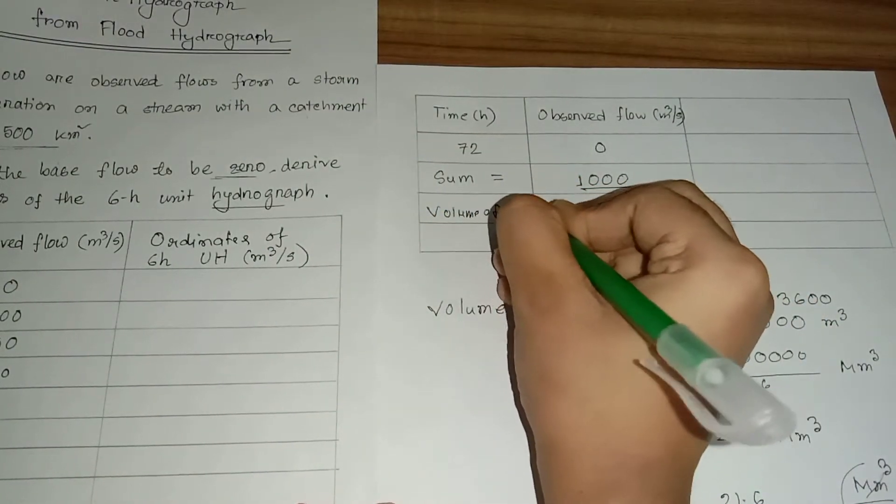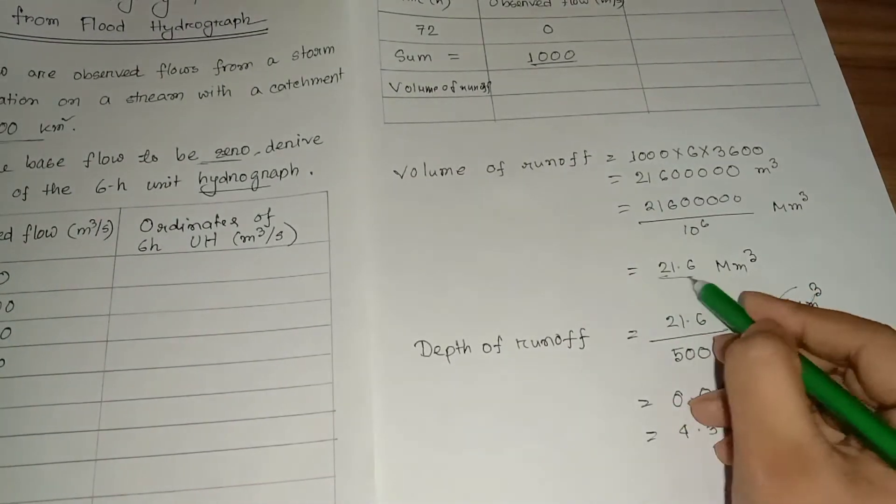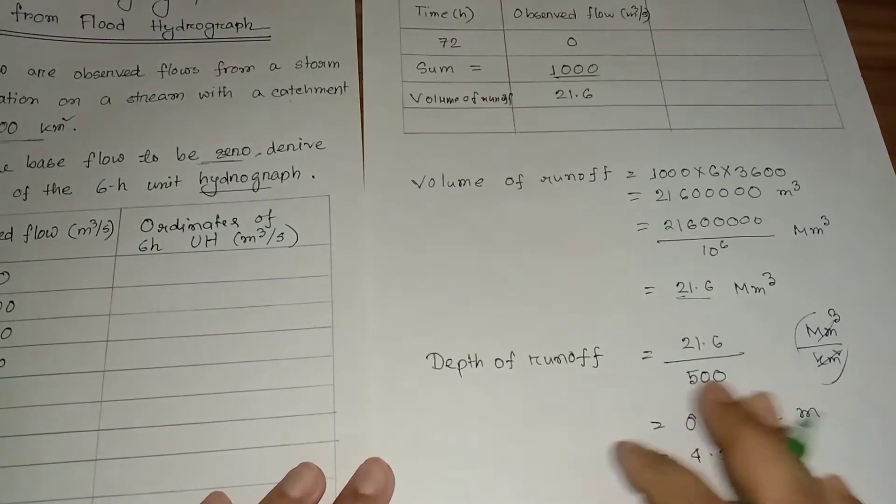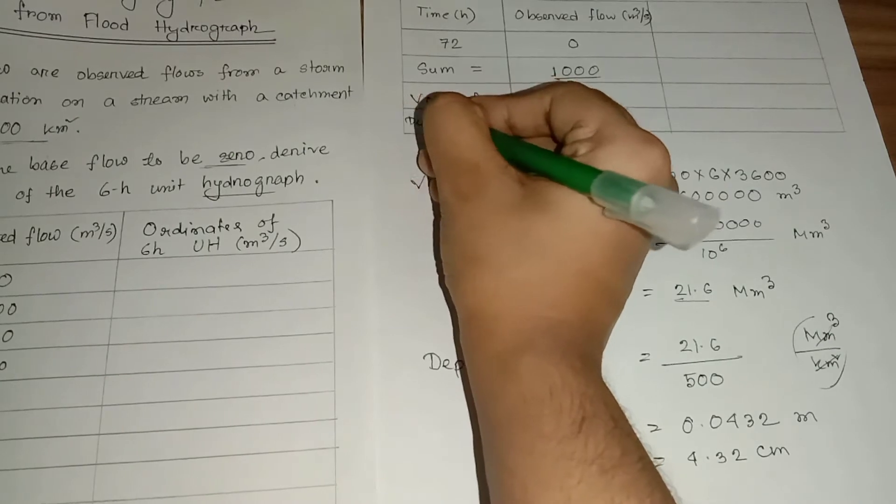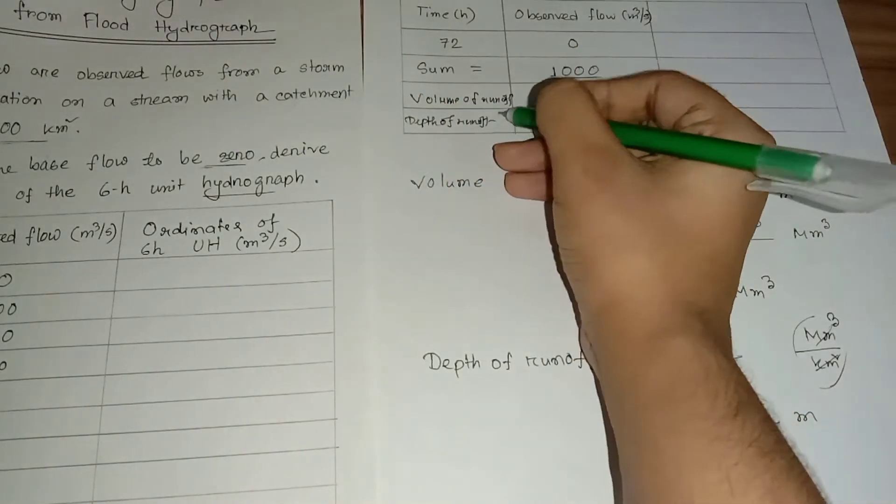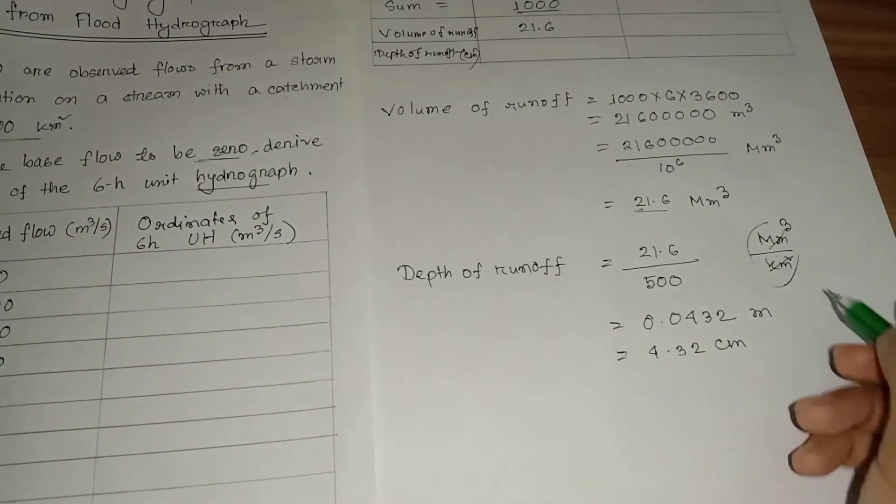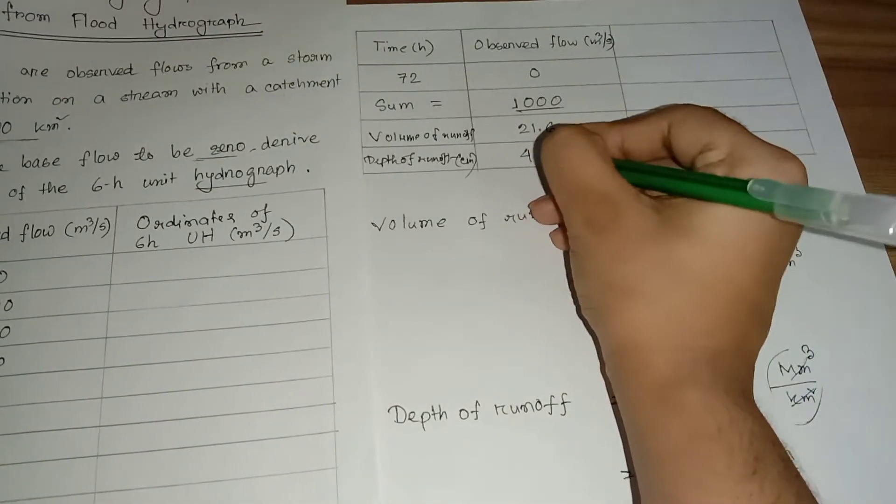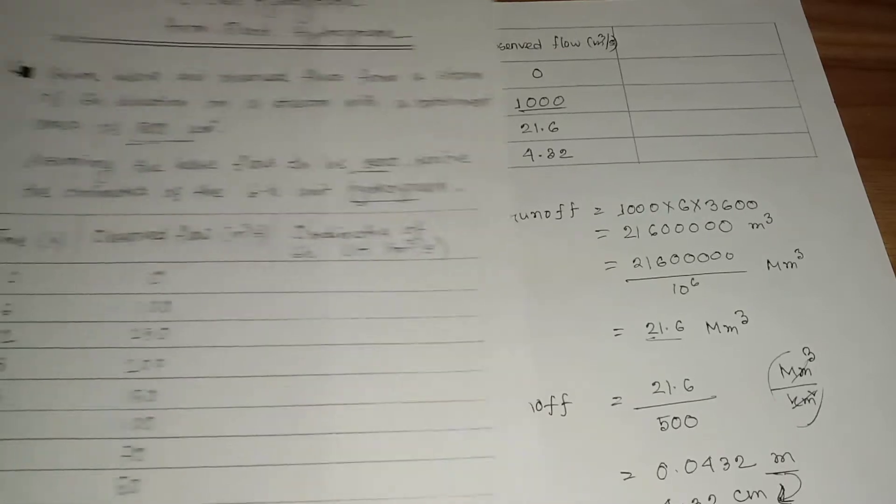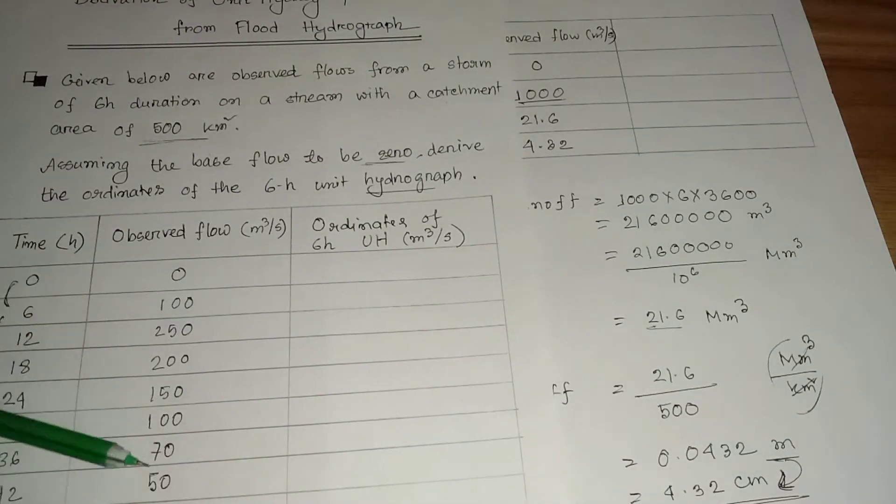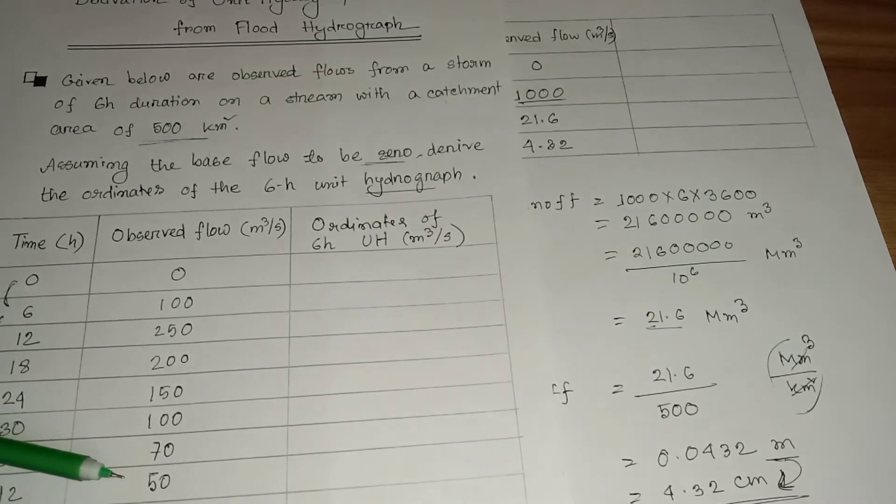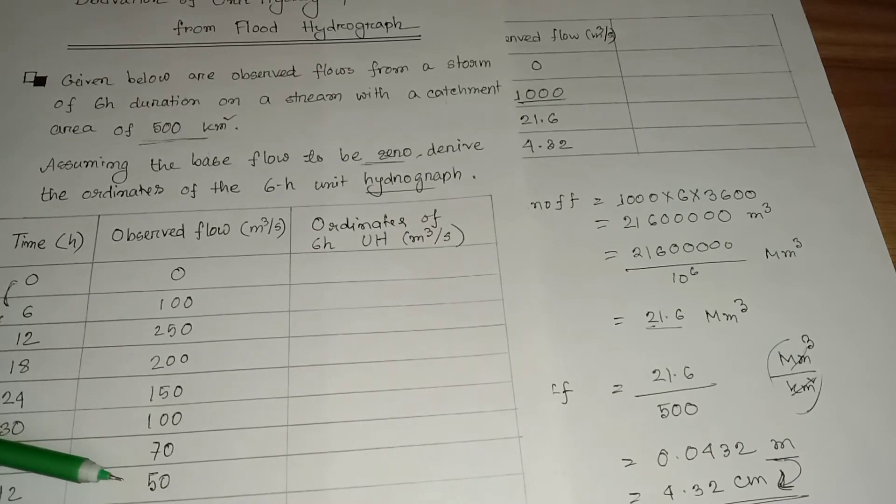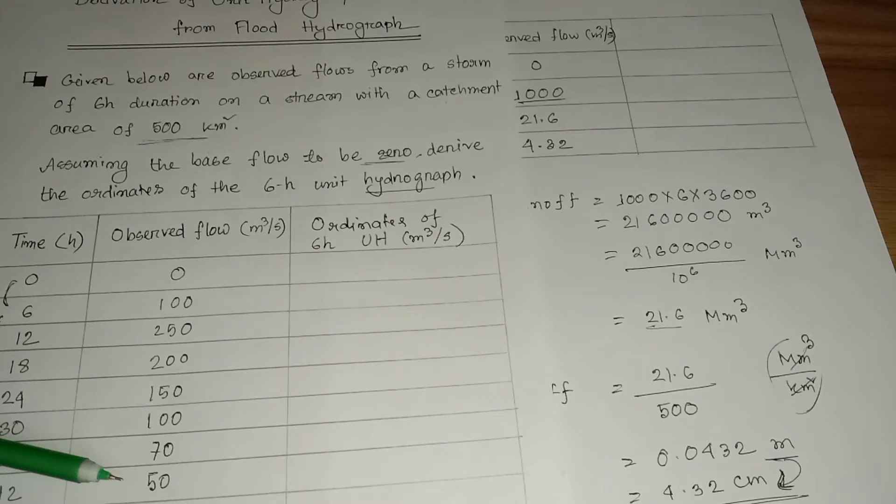Volume of runoff is 21.6 and depth of runoff is 4.32 centimeter. Now I am calculating the ordinates of six hour unit hydrograph. Unit hydrograph is defined as the hydrograph of the runoff resulting from one unit depth or one centimeter of rainfall excess occurring uniformly over the basin for a specific duration.